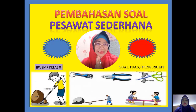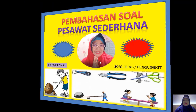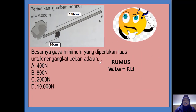Pada video kali ini ibu khusus membahas soal tentang tuas atau pengungkit. Ibu yakin untuk teori kalian sudah memperolehnya di SD, dan ibu sudah memiliki video tentang teori bermacam-macam pesawat sederhana. Kalian dianjurkan untuk melihatnya. Oke, yang pertama: andai ada soal seperti ini — ada sebuah tuas, ada batu besar yang mau dipindahkan, harus ada tuas ini. Tuas itu pengungkit. Boleh pakai bambu, boleh pakai besi, pakai apa saja.